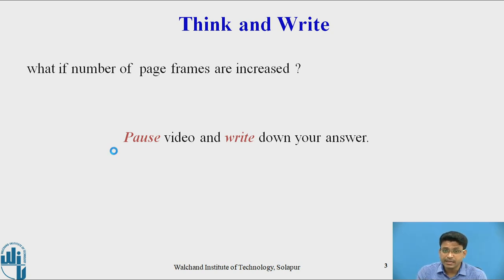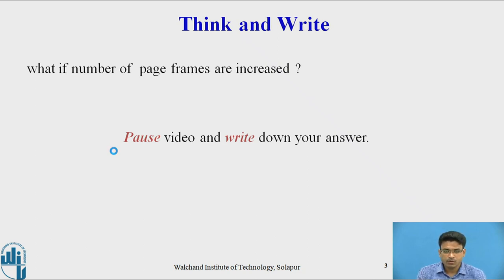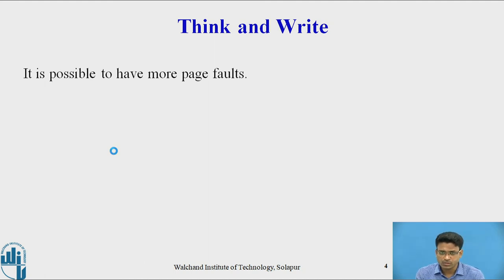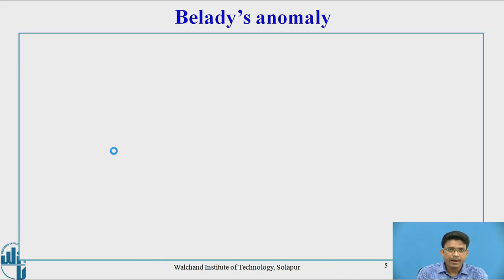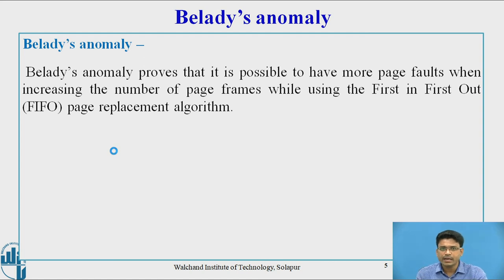What if the number of page frames are increased? Think and write the answer. Currently we have frame size 3 — what if the frame size becomes 5 with the same page numbers? Solve this example and you will get the answer. Belady's anomaly: the Belady's anomaly proves that it is possible to have more page faults when increasing the number of page frames while using the first-in-first-out page replacement. Belady's anomaly has already proved that if the frame size is greater — larger frame size — then page faults are increased.